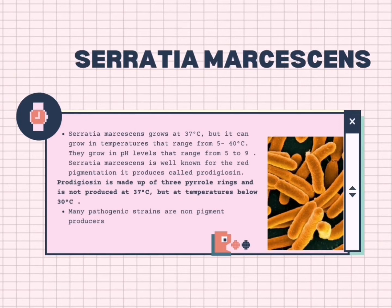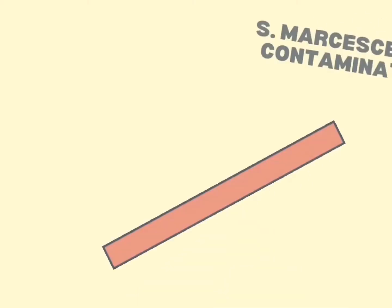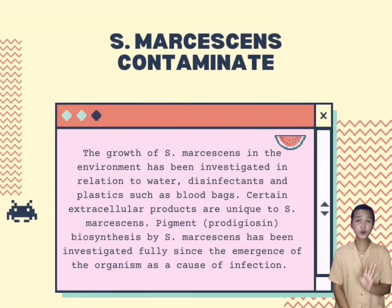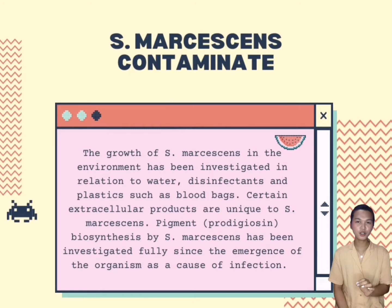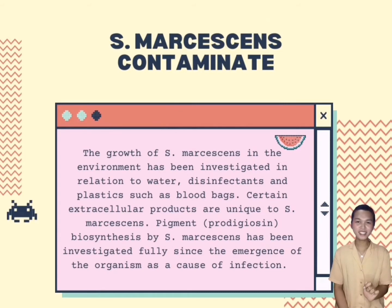Many pathogenic strains are not pigment producers. Serratia marcescens can contaminate — its growth in the environment has been investigated in relation to water, disinfectants, and plastics such as blood bags. Certain extracellular products are unique to Serratia marcescens. Pigment or prodigiosin biosynthesis by Serratia marcescens has been investigated fully since the emergence of the organism as a cause of infection.